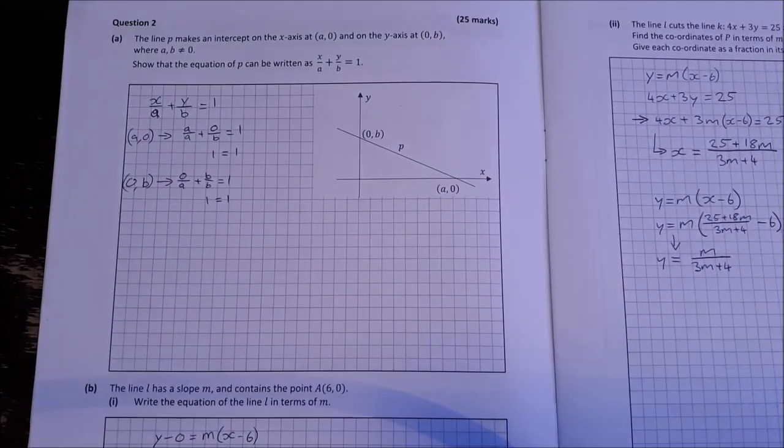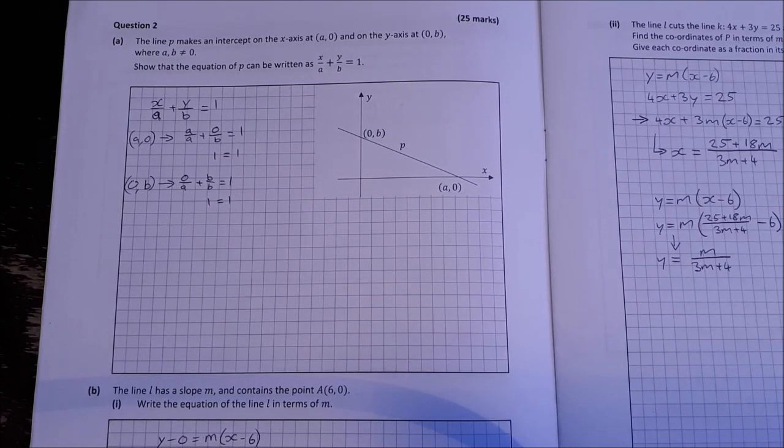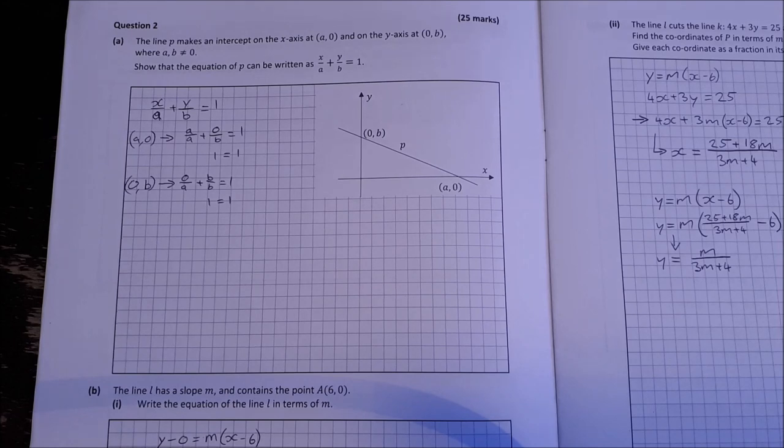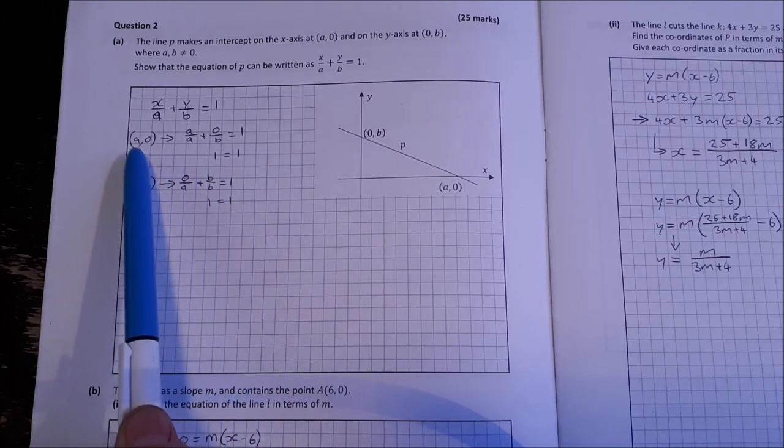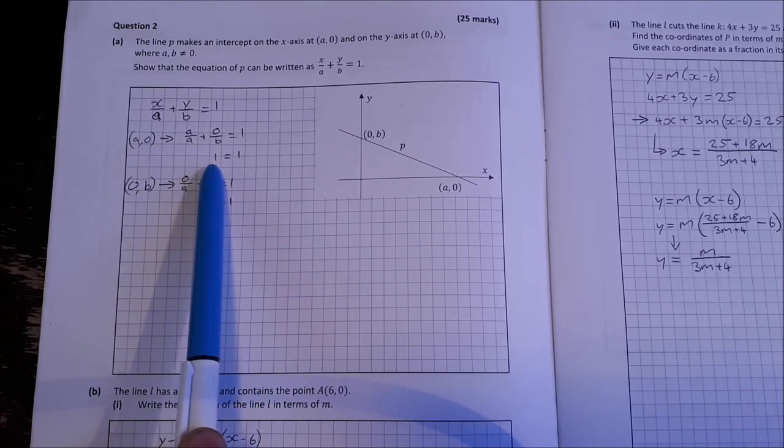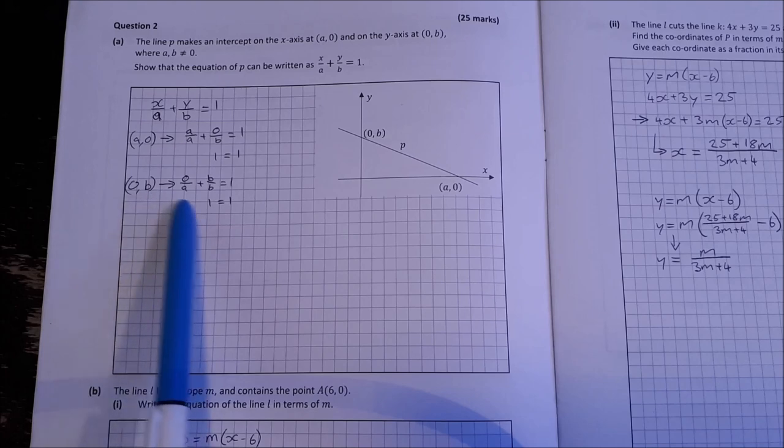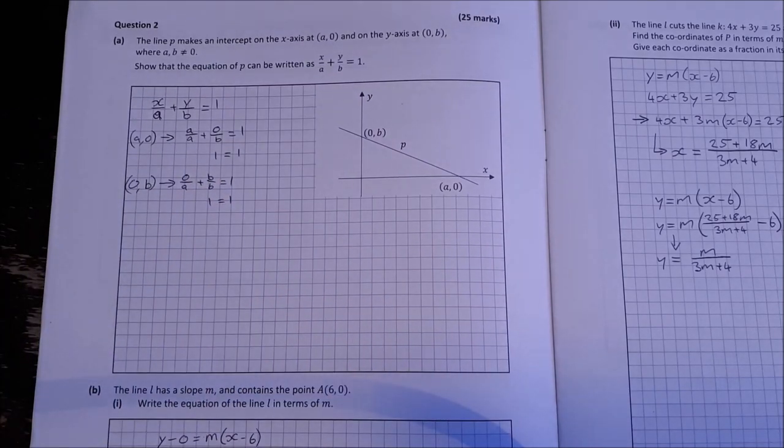Part 2 then, coordinate geometry. The line P makes an intercept on the x-axis at A0 and on the y-axis at 0B where A and B are not equal to zero. Show that the equation can be written as x over A plus y over B equal to 1. Well there's several ways you can do this. The way I've chosen is to sub in each point. Sub in A0 and it should get balanced. Sub in 0B and it should get balanced. It does in both cases so that means the equation can be written as that.